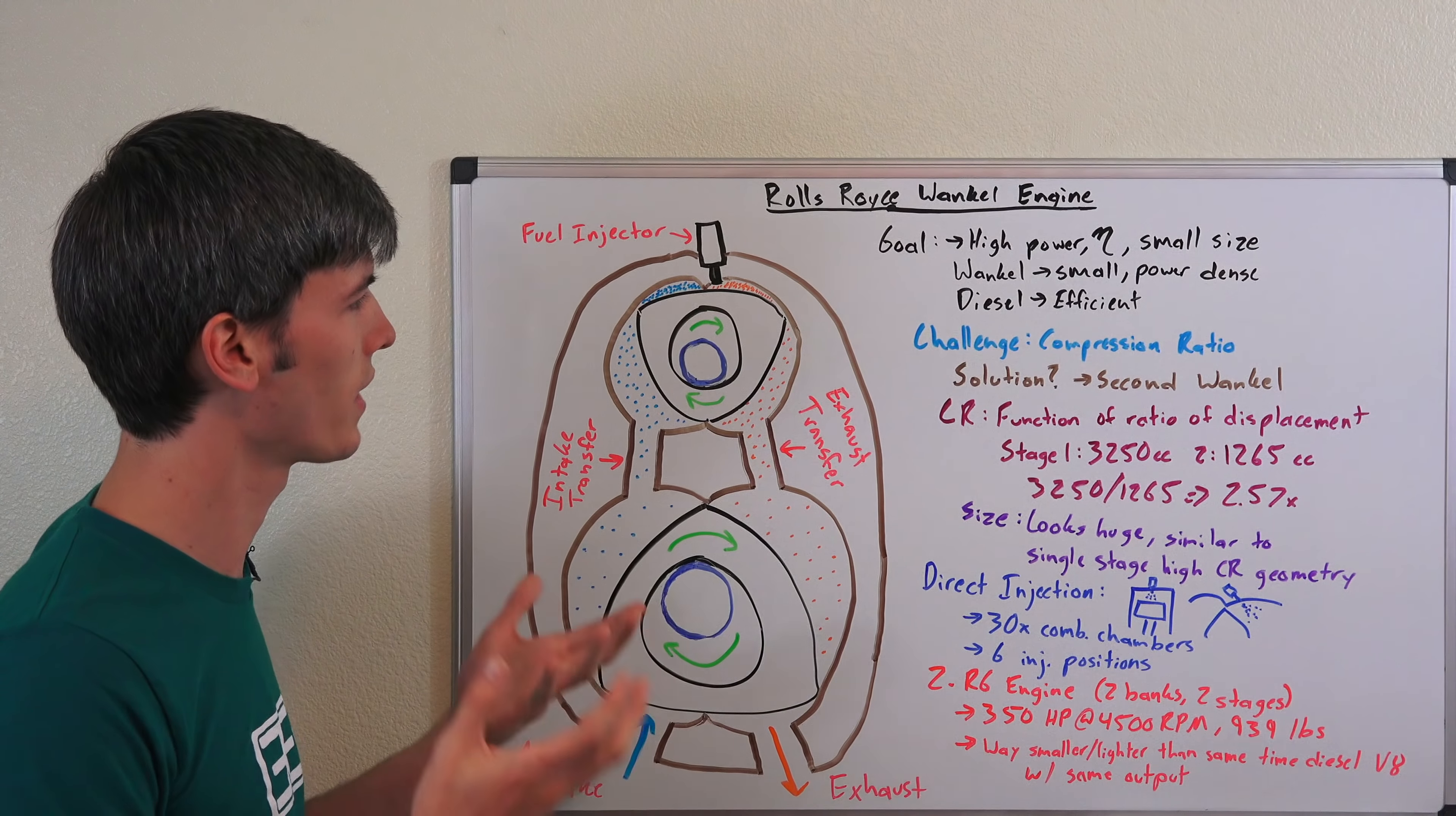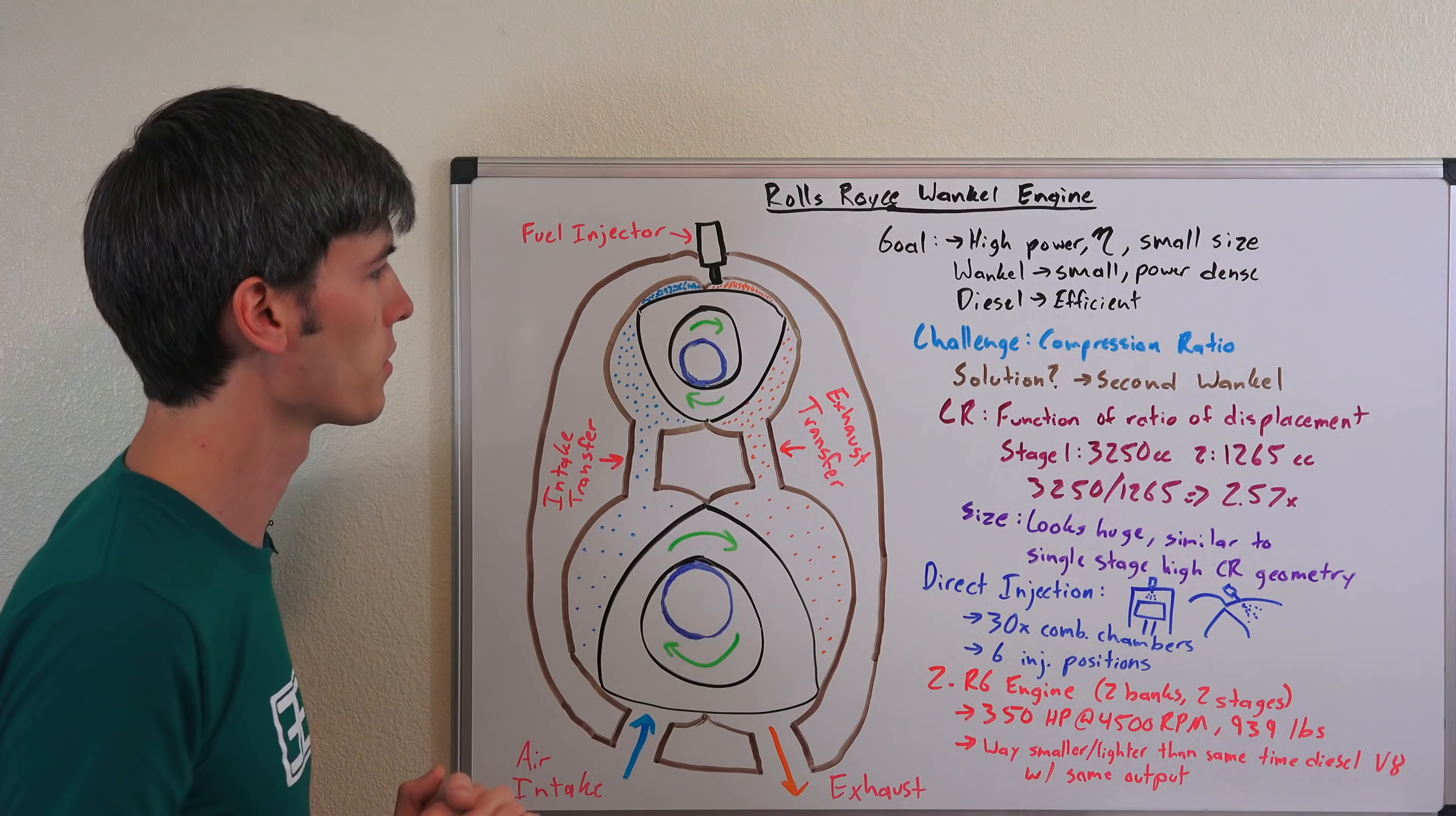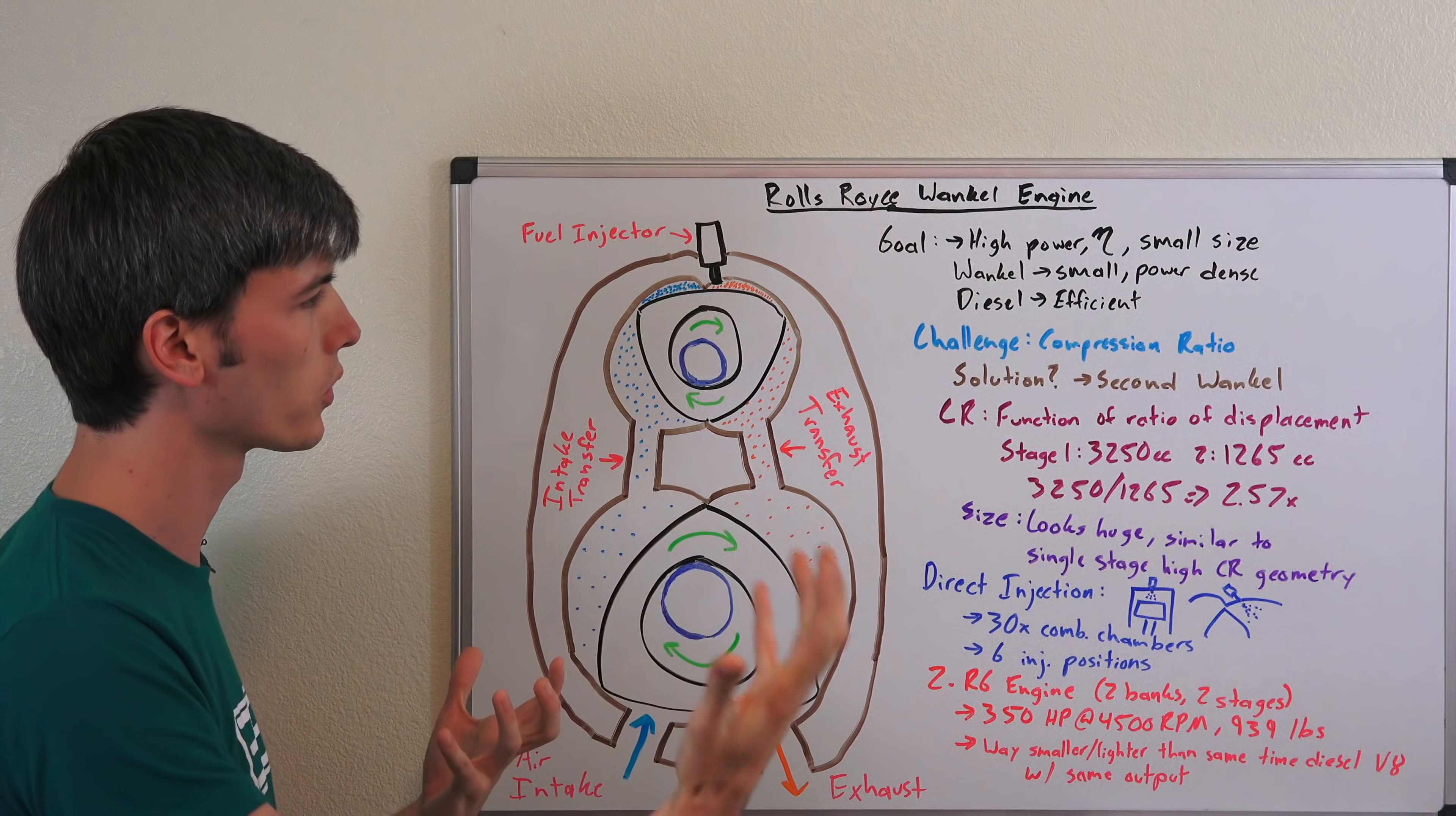The challenge they ran into is that Wankel engines are hard to design with a high compression ratio. Their solution—you could supercharge it, you could turbocharge it—they decided to add a whole other Wankel engine rotary in there, basically to use that as a supercharger or as a compressor. This is just a positive displacement compressor that forces more air into this combustion chamber right here. So this one is just for transferring air. This one is actually where combustion is occurring.